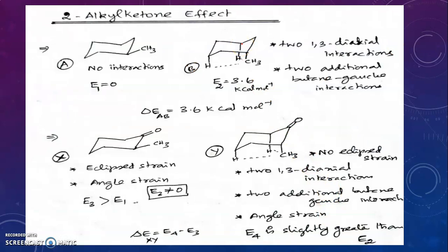In cyclohexanone we need to learn two important effects: the 2-alkyl-ketone effect and the 3-alkyl-ketone effect. If we introduce a methyl group at position 2 of cyclohexanone, it causes a particular effect in the molecule called the 2-alkyl-ketone effect.